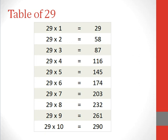Table of 29. 29 5s are 145, 29 6s are 174, 29 7s are 203, 29 8s are 232, 29 9s are 261, 29 10s are 290.